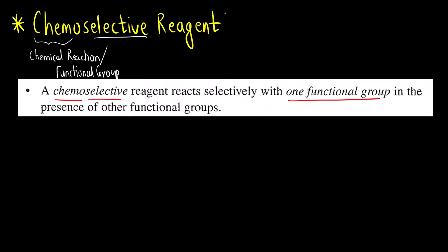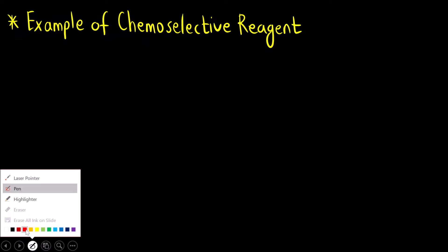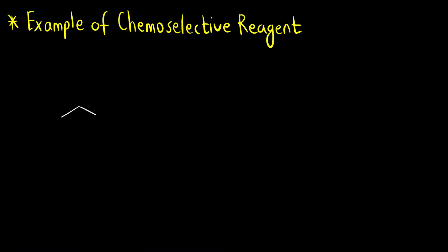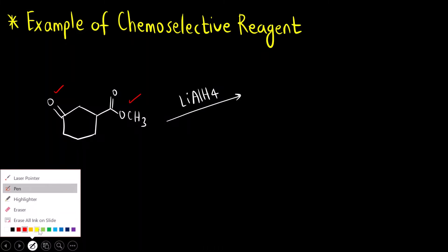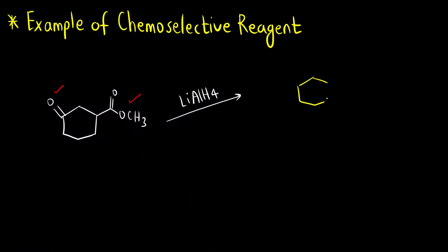Let us understand the meaning of this with the help of an example. Suppose I have this reactant — a cycloalkane — and here I have an ester group (R-C-O-O-R) and I have a ketone group. Now if I react this with a very strong reducing agent like lithium aluminum hydride (LiAlH4), what will happen? LiAlH4 reduces both the ester as well as the ketone group. The ketone will be reduced to a secondary alcohol and the ester will be reduced to a primary alcohol (CH2OH). It basically reduces by donating H⁻, that is, it is a hydride donor.